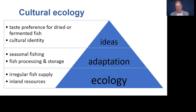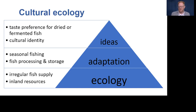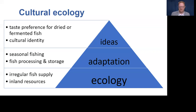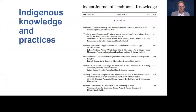This pyramid diagram shows ecological conditions as the cultural base with adaptations in the middle. From this model, cultural preferences for dried fish at the very top can be traced back to specific environmental conditions in which fish preservation originally offered a means of avoiding food shortage.